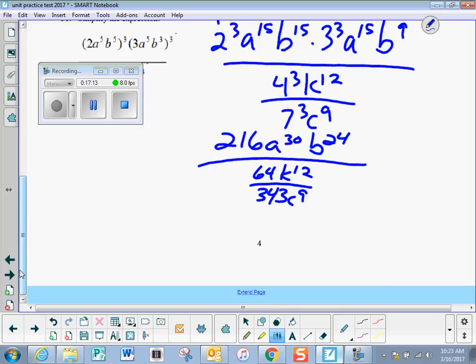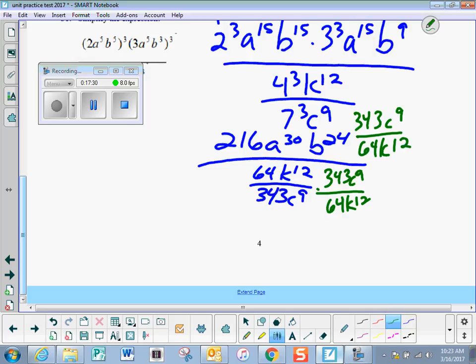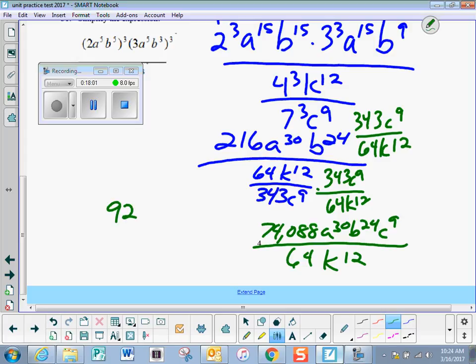So then to simplify a complex fraction, I simply multiply by the reciprocal of my denominator, which would be 343, C to the 9th, over 64, K to the 12th. So when I go 343 times 216, I get 74,088, A to the 30th, B to the 24th, C to the 9th, over 64, K to the 12th. Believe it or not, those do have an 8 in common. If you divide out the 8, you get 9261, A to the 30th, B to the 24th, C to the 9th, over 8, K to the 12th.